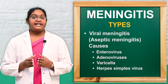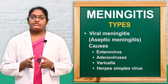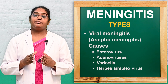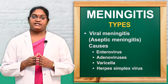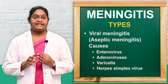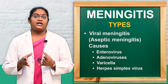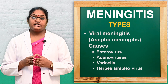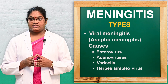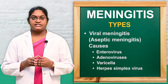The second type is viral meningitis, also known as aseptic meningitis, caused by viruses such as enterovirus, adenovirus, varicella, and herpes simplex virus. These are the main causative agents of viral meningitis. Viral meningitis is less severe than bacterial meningitis.